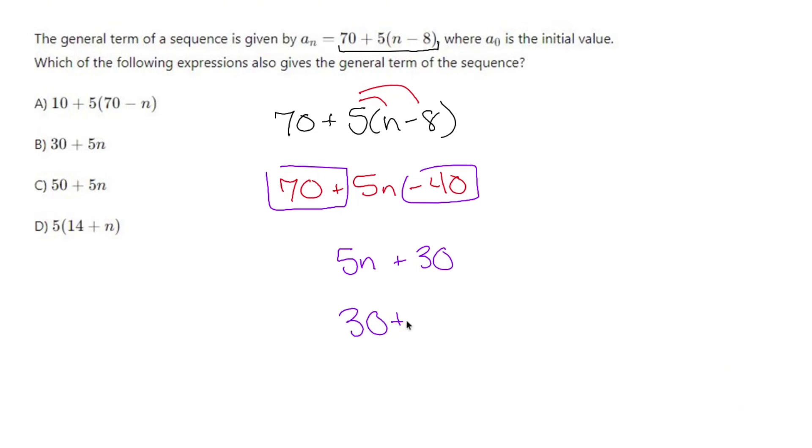30 plus 5n, because they're giving us the old switcheroo, and that's going to give me the answer of B. So yeah, not a difficult problem, not by any stretch.